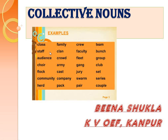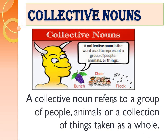Nothing here is representing one person or one place or one thing. Class is a group of students, family is a group of family members. Team — one player can't create a team, so we need many players. A collective noun refers to a group of people, animals, or a collection of things taken as a whole.